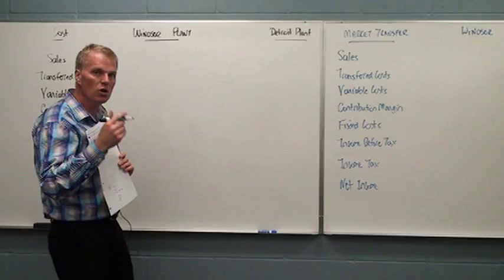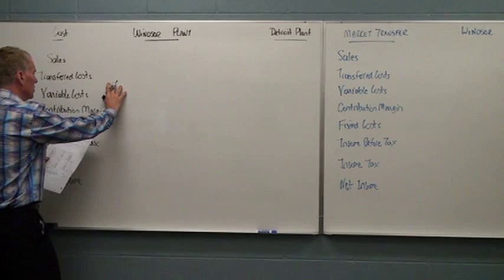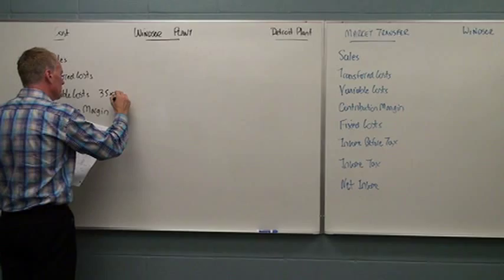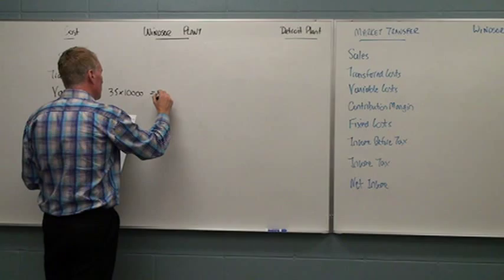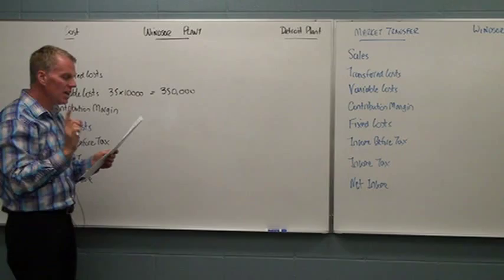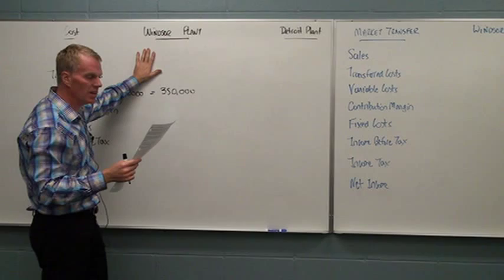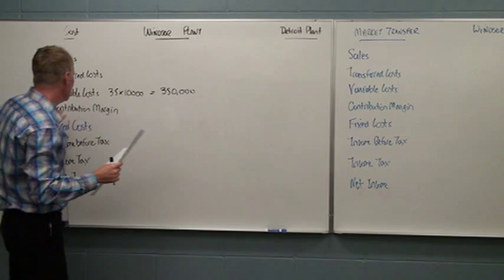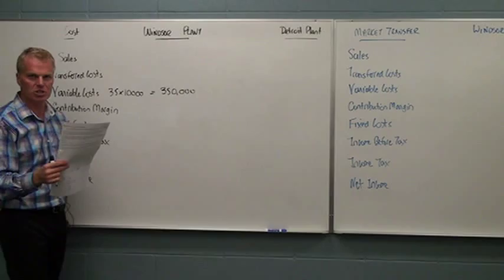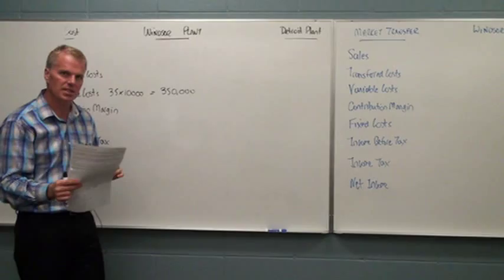So our first step here for the Windsor plant is that our variable costs are $35 a tube times 10,000 tubes. Our variable costs will become $350,000. Now the key is we're sort of working backwards here. We don't know what the transfer price is going to be yet. We have to understand what all our costs are. You'll notice that the fixed cost here is actually highlighted in blue because when I've marked this type of question on tests many times, this is where students struggle. And this is what I'm emphasizing today very heavily. The fixed costs are $200,000.